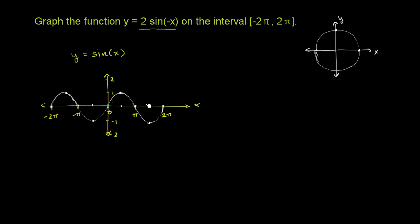What is the amplitude? We vary between 1 and negative 1. The total difference between minimum and maximum is 2, so half of that is 1. Another way to think about it: we vary 1 from our middle point. So the amplitude is 1.